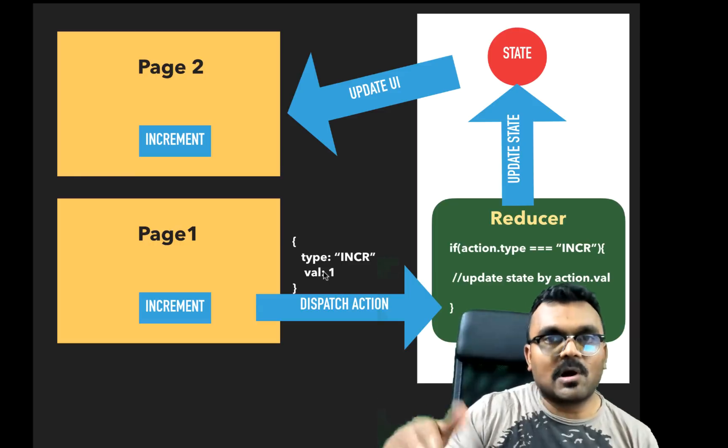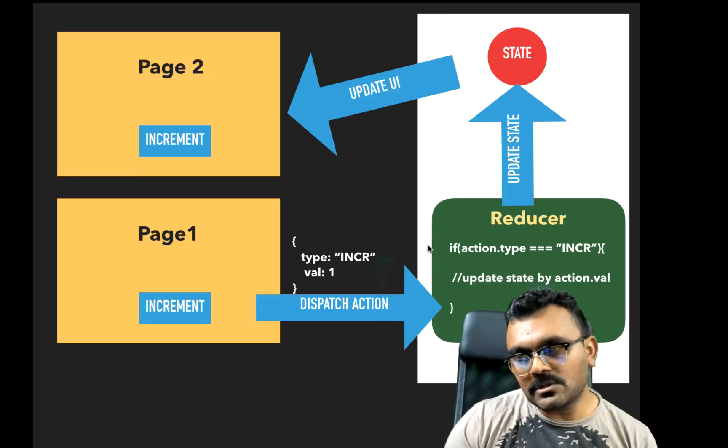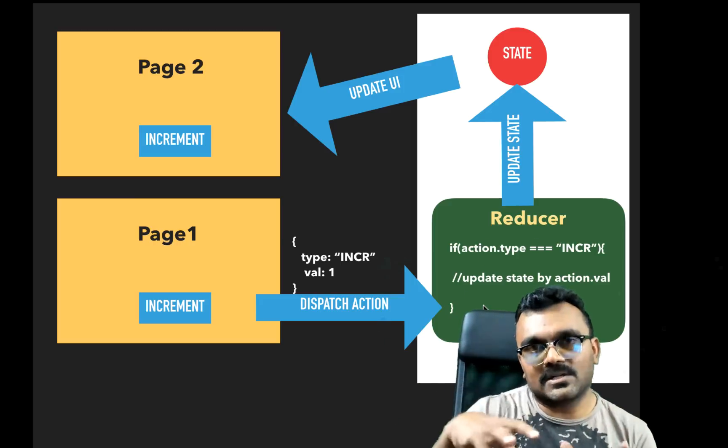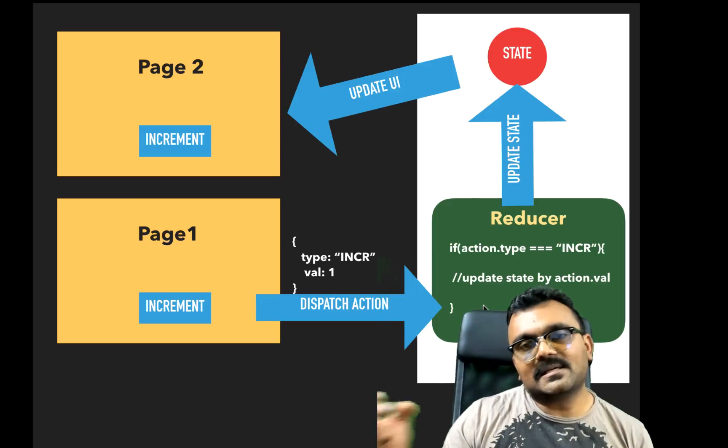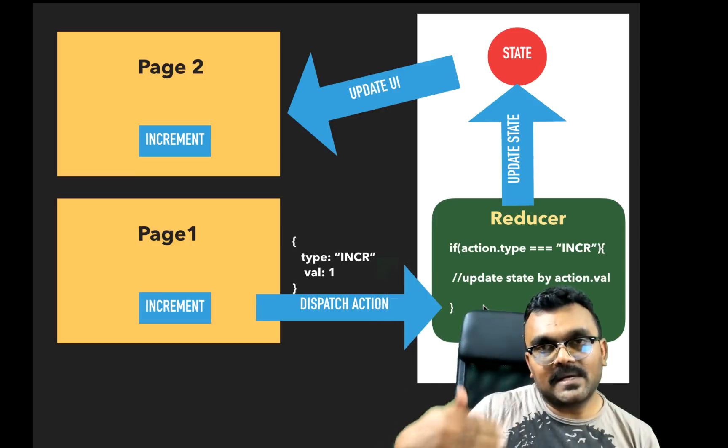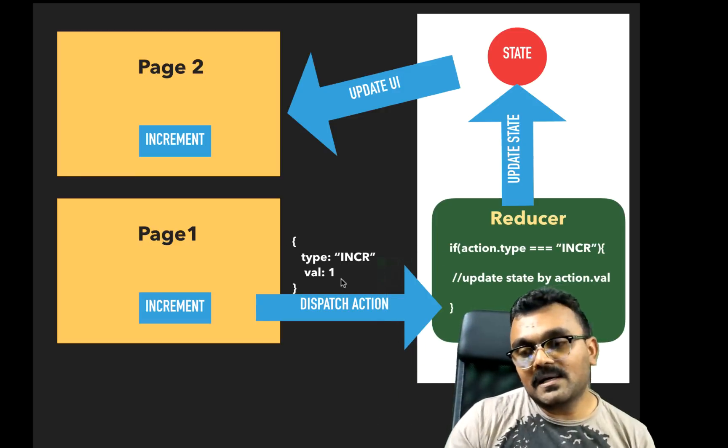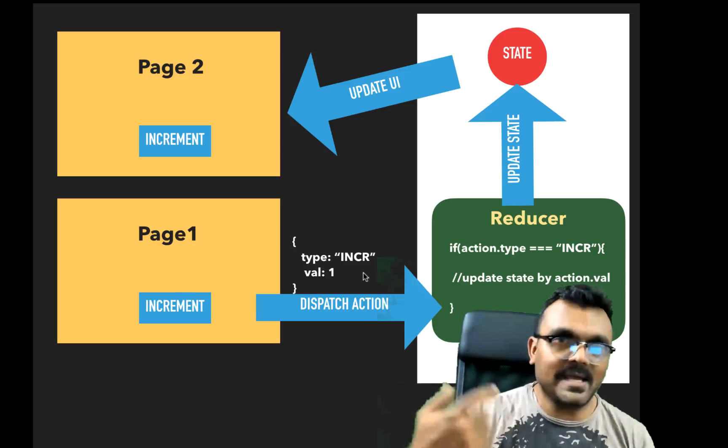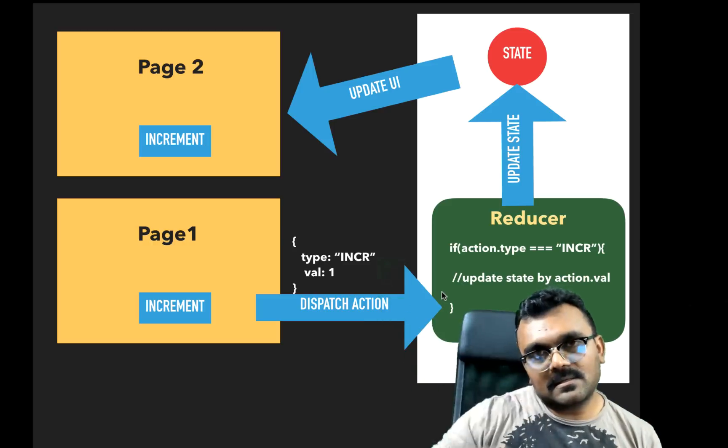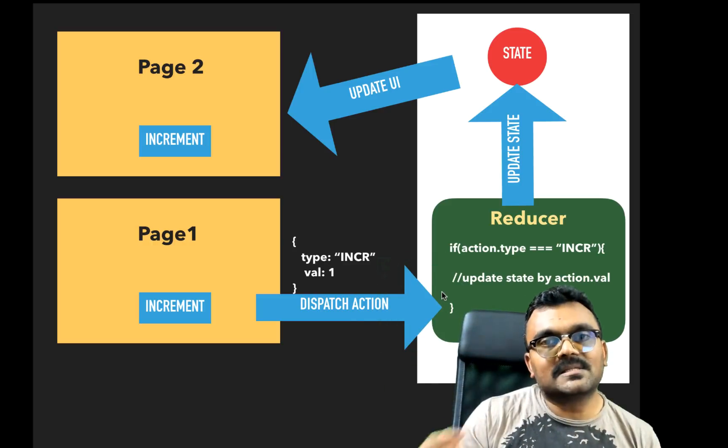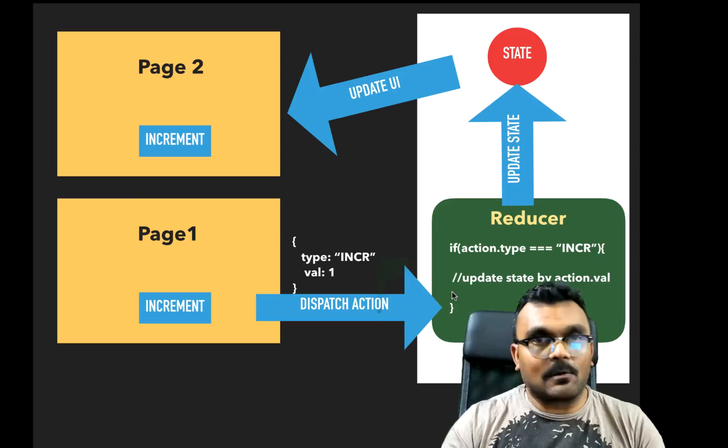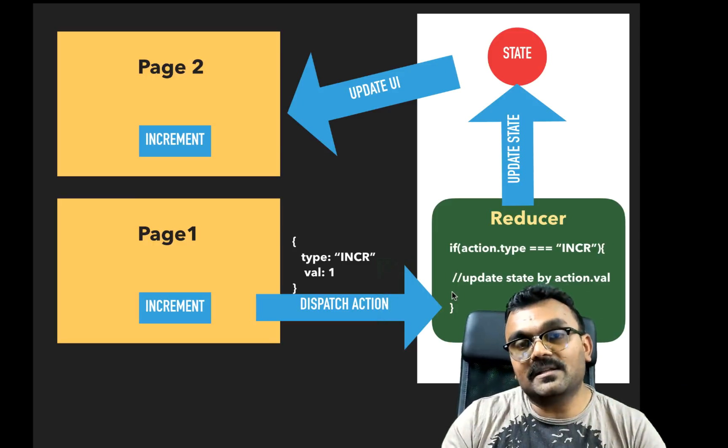And what happens when a reducer receives this, it checks if it has this type. If the action type exists, then there should be some functionality inside which basically takes the current state, creates a copy of it, and then modifies that state according to the functionality. So if it's incrementing, it adds one to the age. And then it sends the state back. And then it updates it. So it's similar to how React works, pretty much, in that sense, where you basically don't mutate the state directly.